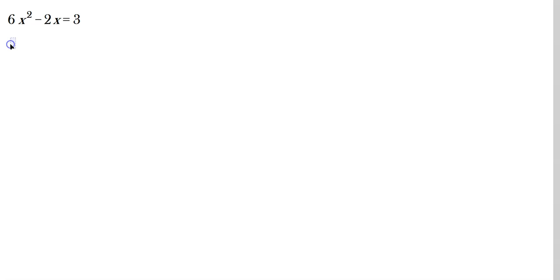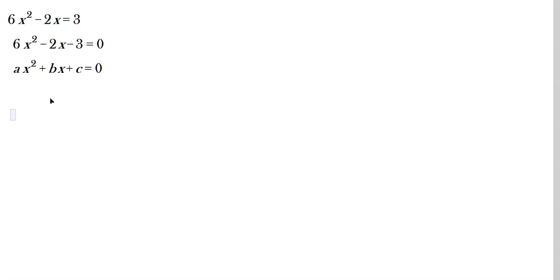Let's look at this one: 6x squared minus 2x equals 3. This might involve some messy decimal manipulation. Rearranging: 6x squared minus 2x minus 3 equals 0. So a is 6, b is negative 2, and c is negative 3.